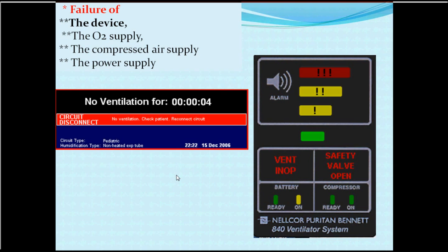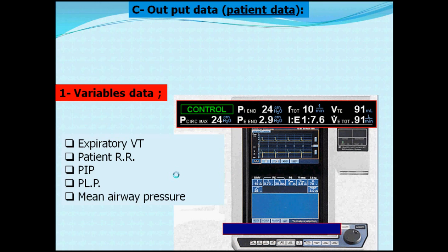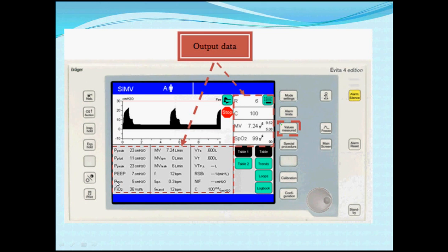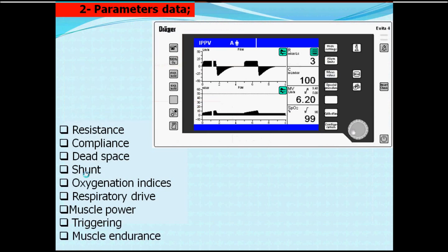The output data, an advanced technology feature, gives you numerical values or graphs about peak pressure, mean pressure, the I:E ratio, expired tidal volume, minute volume, and the ratio of inspiratory spontaneous to mandatory breathing. Additionally, it provides airway resistance (inspiratory and expiratory), compliance, minute volume, peak flow, maximal inspiratory force, and rapid shallow breathing index — a lot of data available from the output panel.